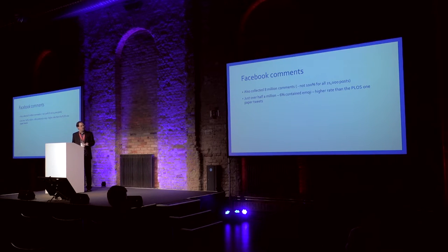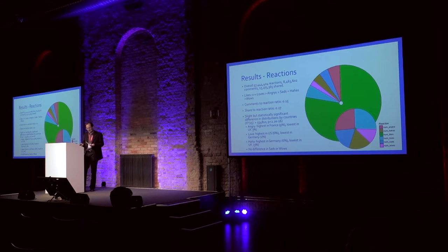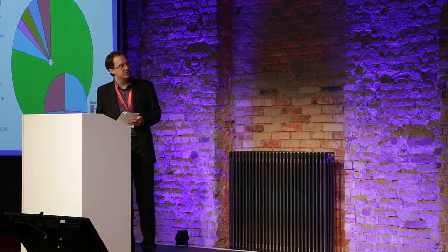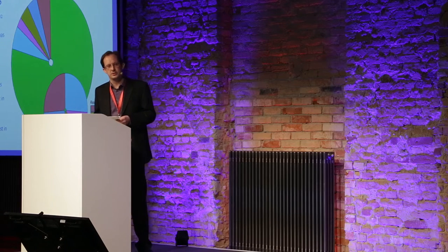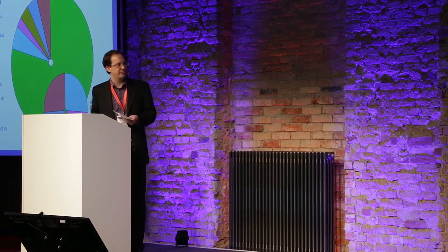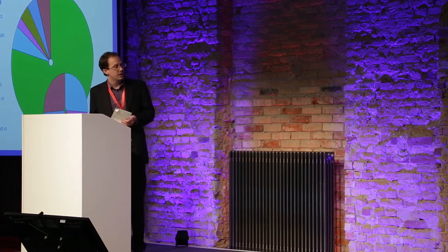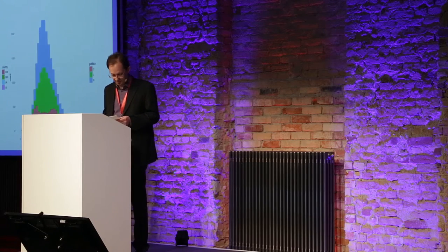About half a million of the comments I collected contained emoji, which is a slightly higher rate than the tweets in the Novak et al. paper. This is just the proportions of the reactions on a pie chart. If you remove the likes, you can see that the angries and loves are about level, and wows are least common. There are some differences in proportions across different countries. Angry reactions were highest in France at 9% and lowest in the UK at 3%. Love was highest in the US and lowest in Germany. Haha was highest in Germany and lowest in the UK. There wasn't much difference in the numbers for sads or wows.